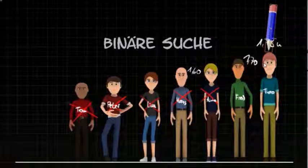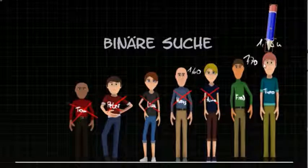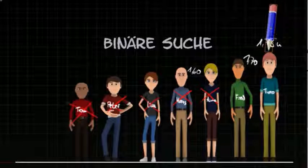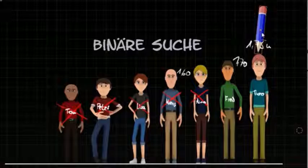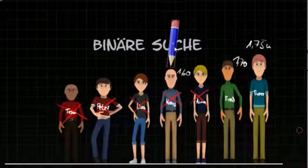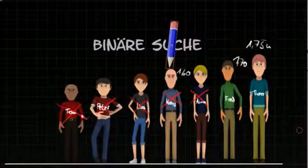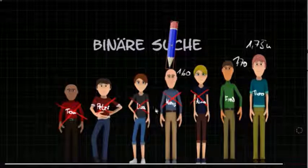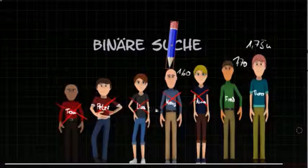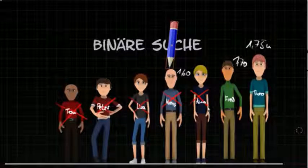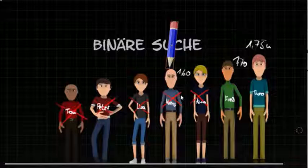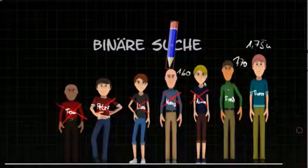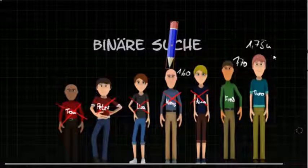Every time I am checking if the correct person has been found, I can either exclude the left side or the right side from my search. When I started with Hans, I excluded Tom, Peter and Lisa. Which means with every step I exclude half of the persons in the list. So I repeatedly exclude half of the elements in the list until only one element remains.